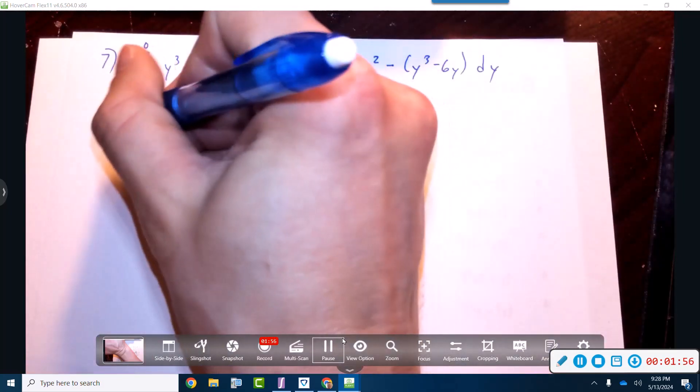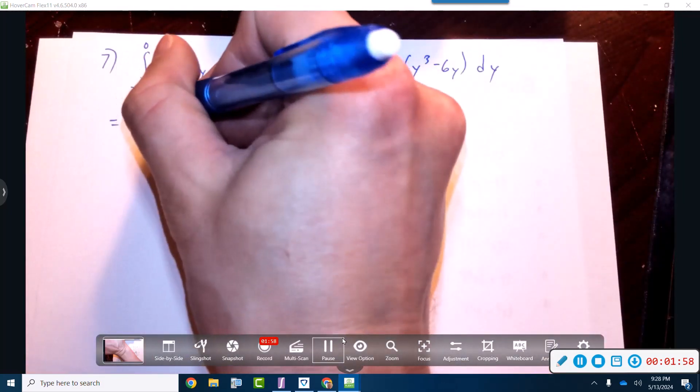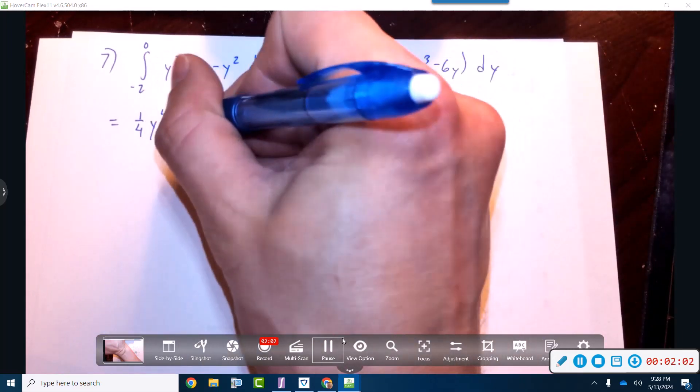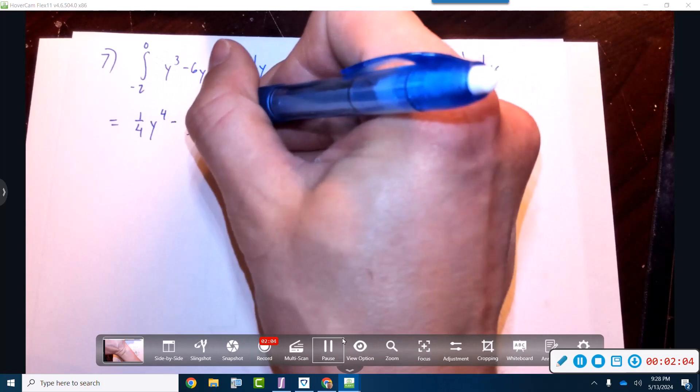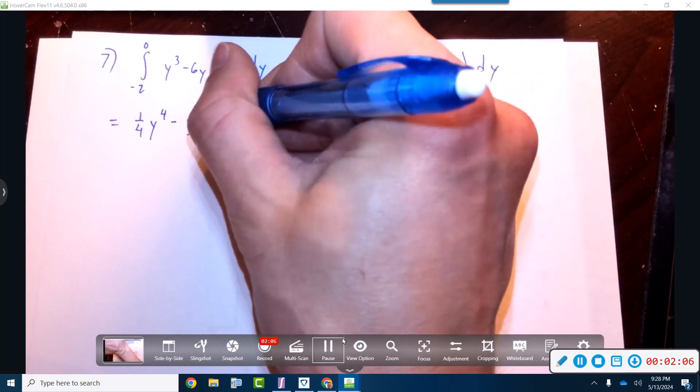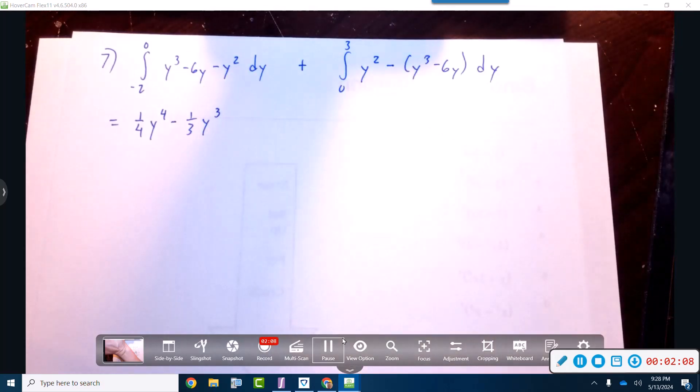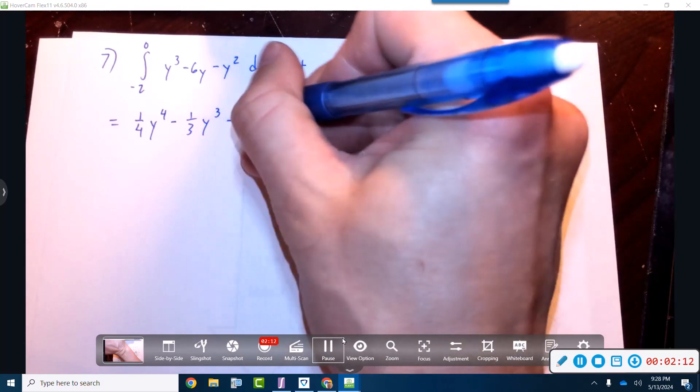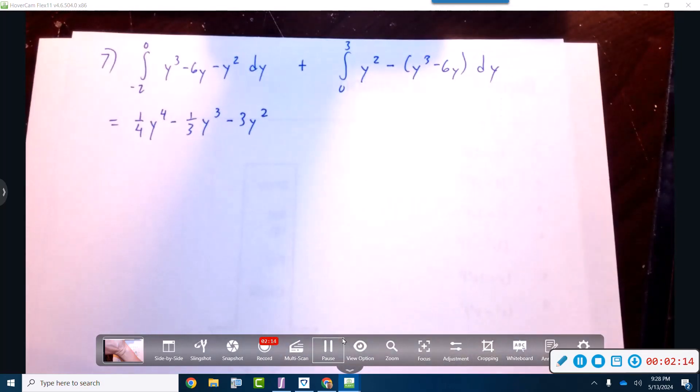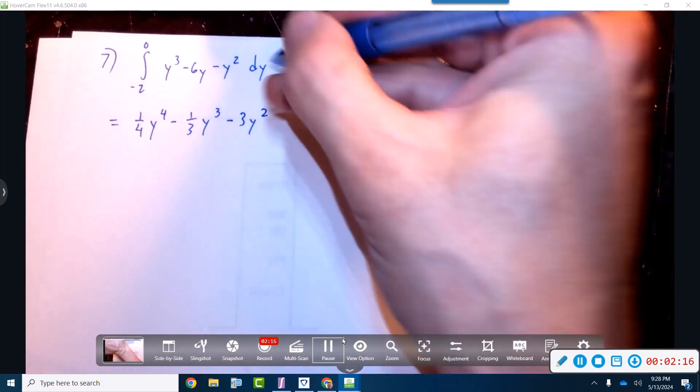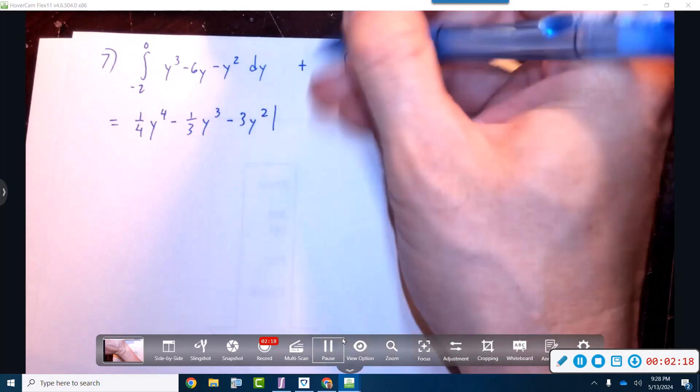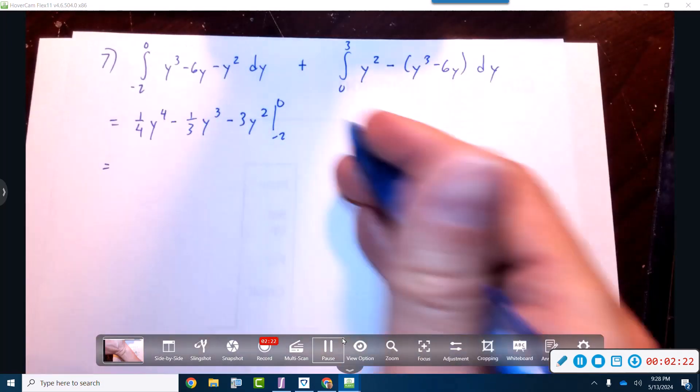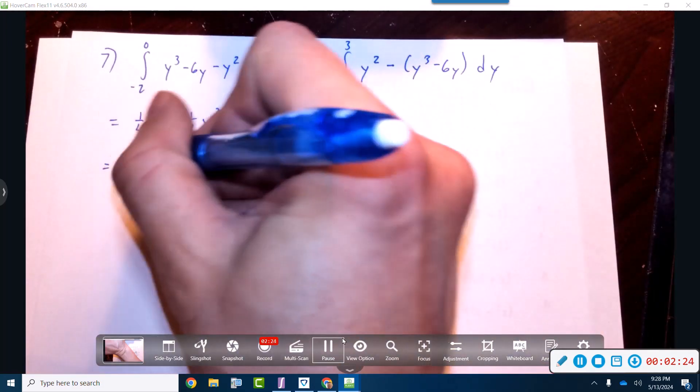Now we've got one fourth y to the fourth, I'm going to put this over here, so y, negative one third y to the three, and then we're going to get minus three y squared. We're going to evaluate this at negative two to zero. So plugging in the zero, zero.